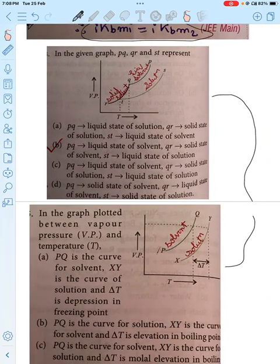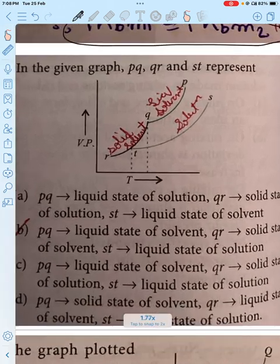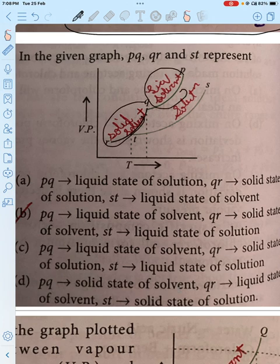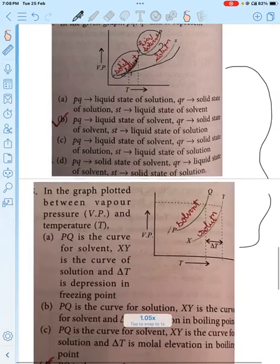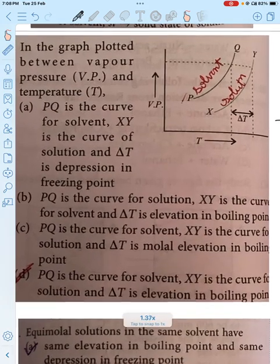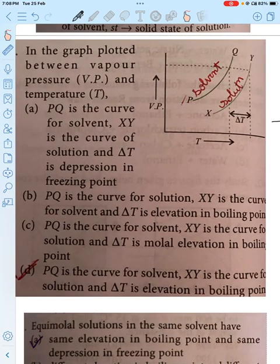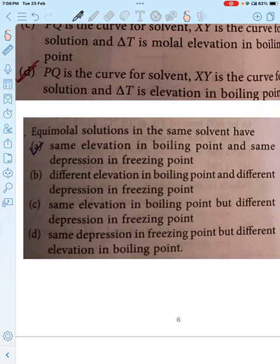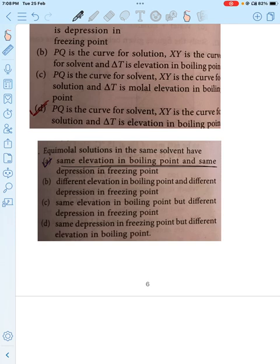So it has 5 ions, that's why it is having the highest. The next question: equimolal solutions in the same solvent have the same elevation in boiling point and same depression in freezing point because they are equimolal and same solvent.